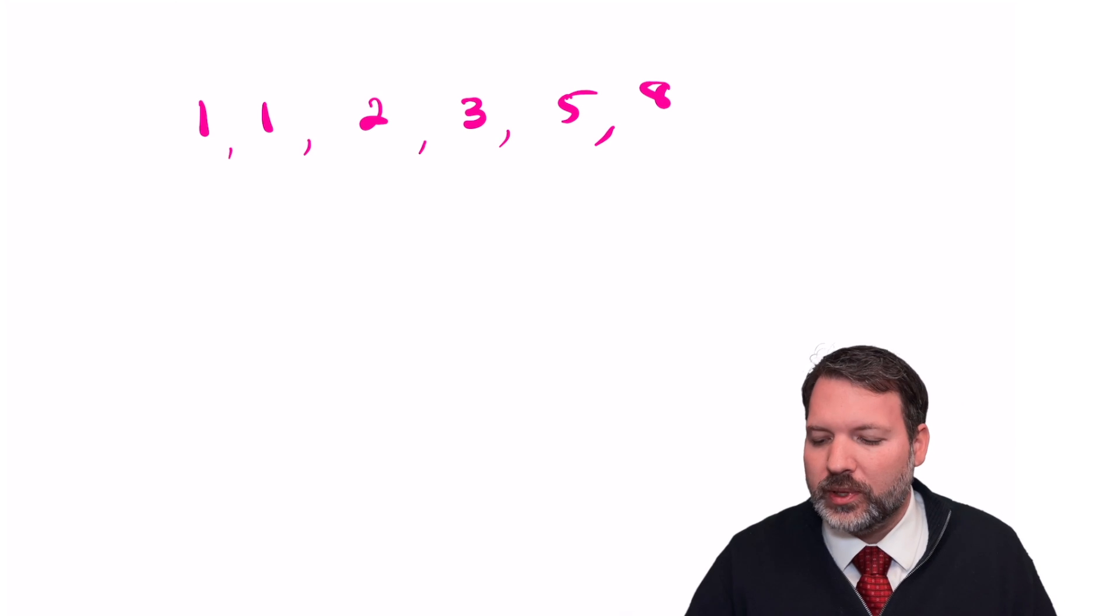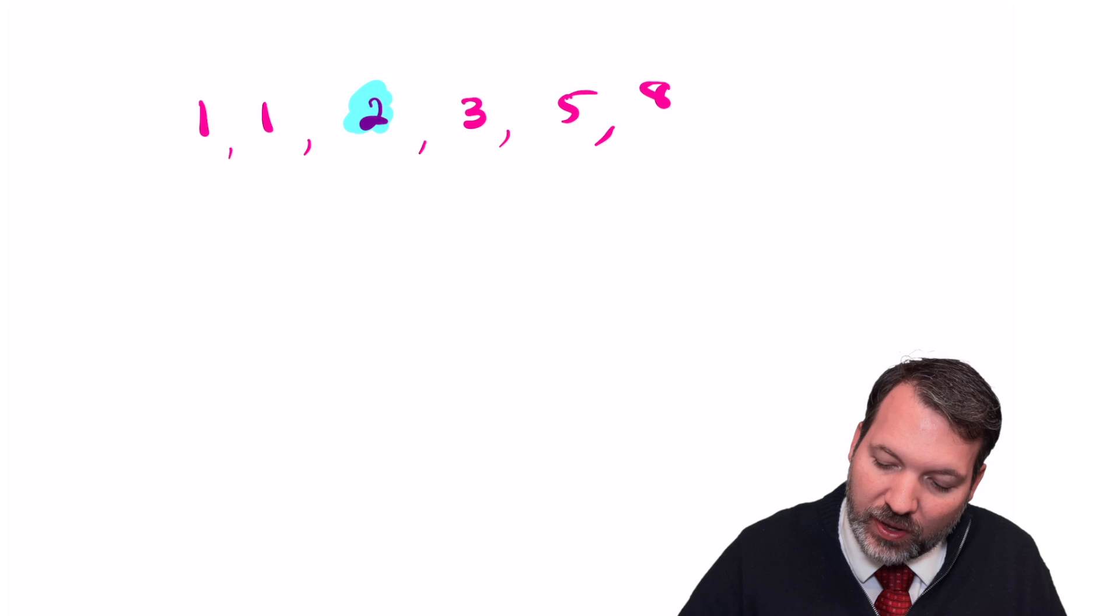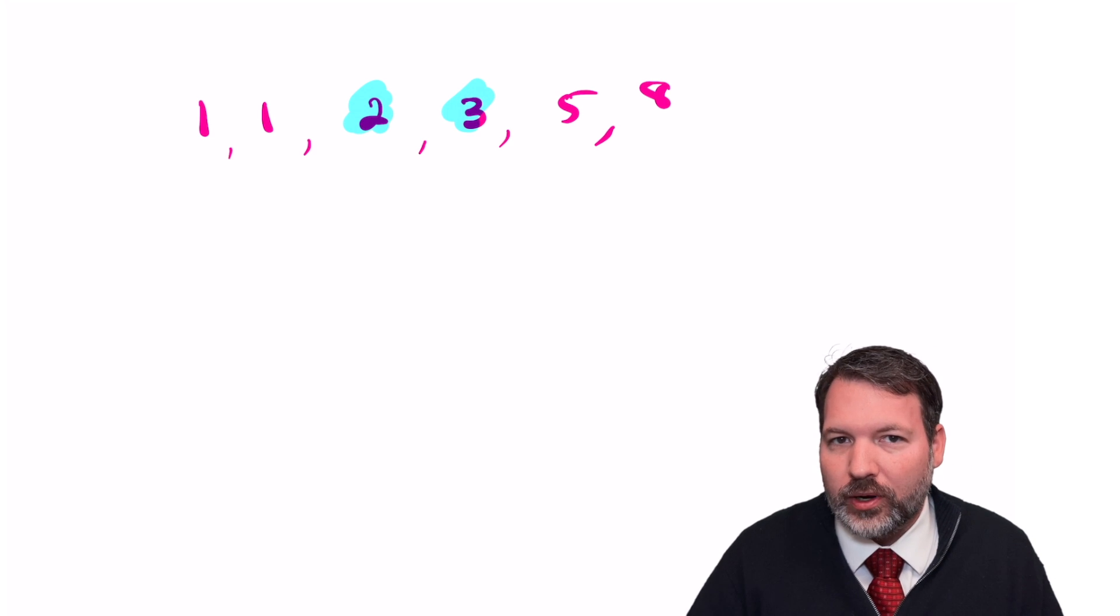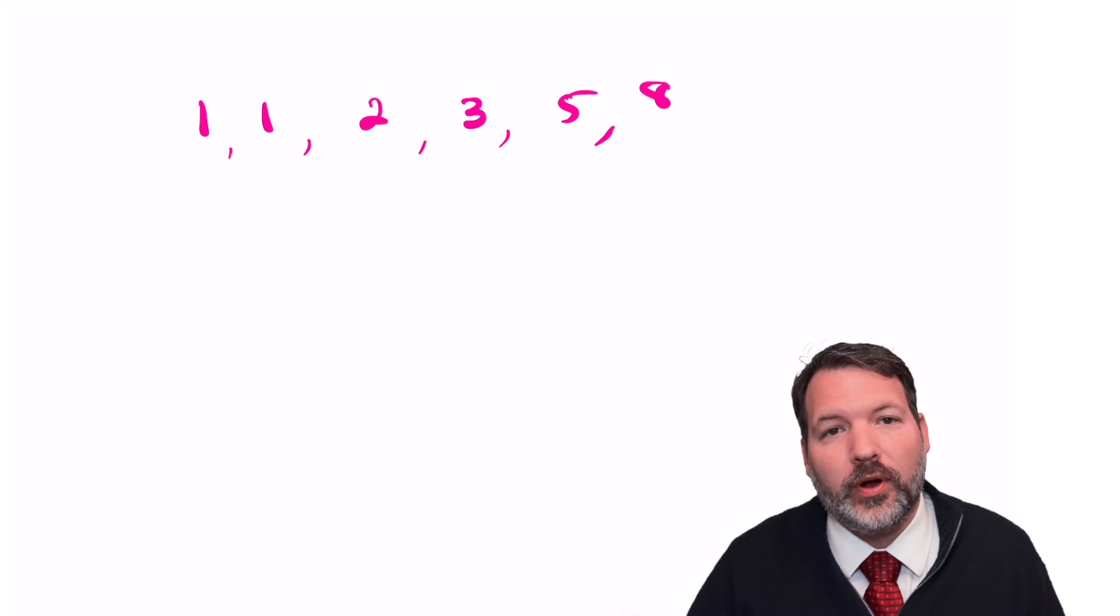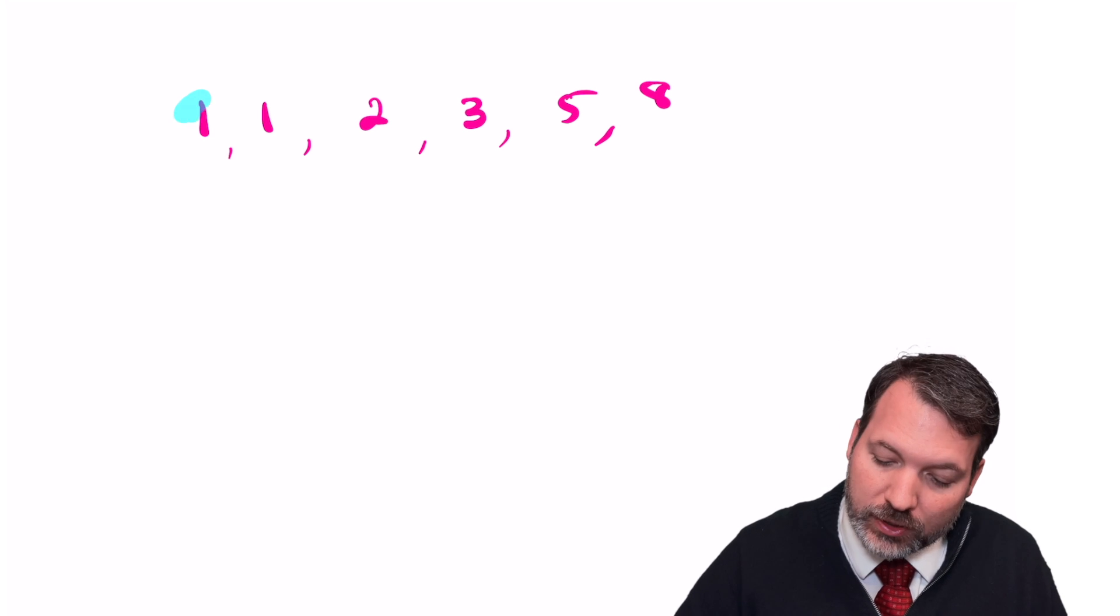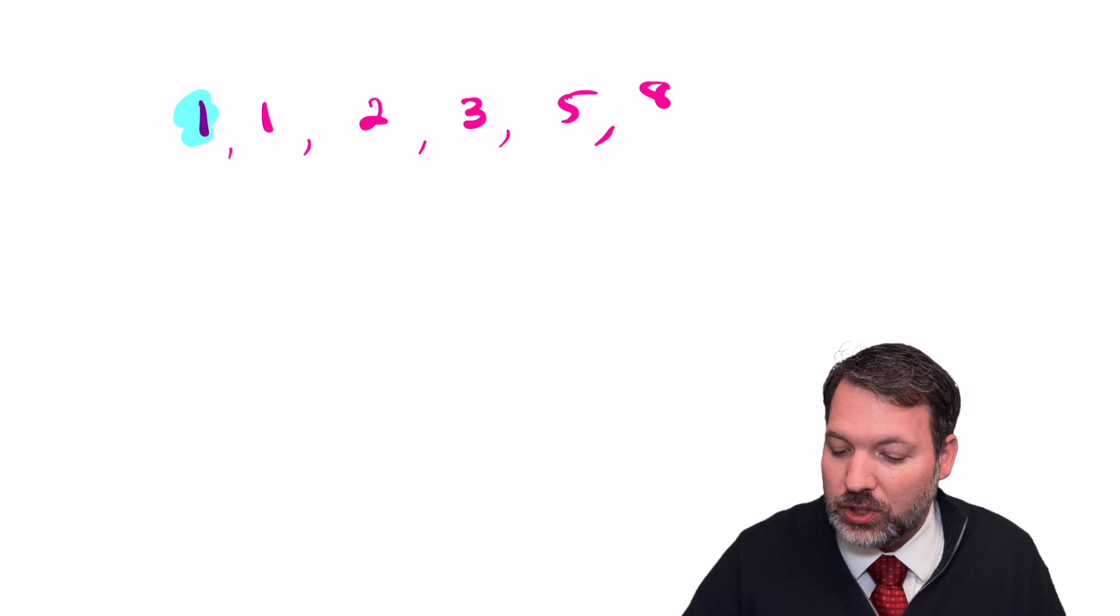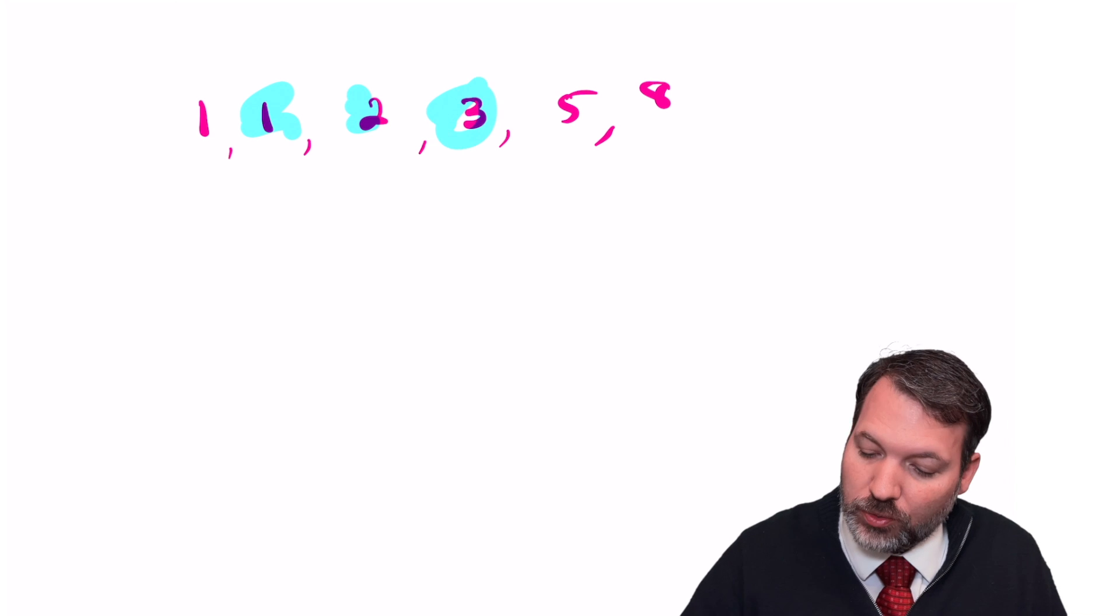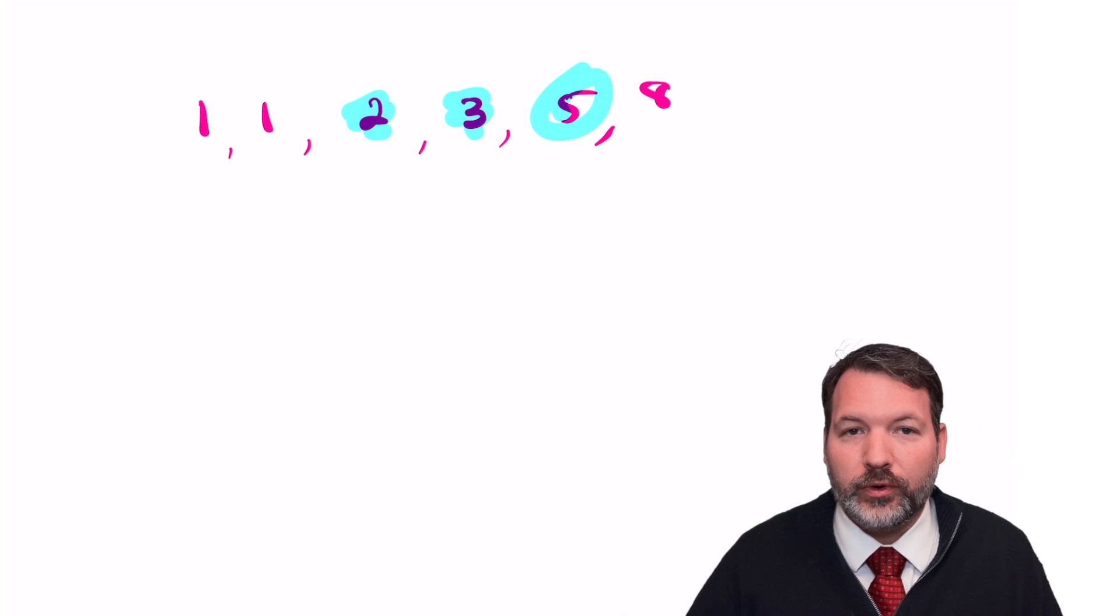The way we generate any new term in the sequence is we take the previous two terms and add them together, beginning from 1 and 1, or some people begin it from 0 and 1. We can generate all the other terms in the sequence. For example, 1 plus 1 makes 2, 1 plus 2 makes 3, 2 plus 3 makes 5, on and on forever.